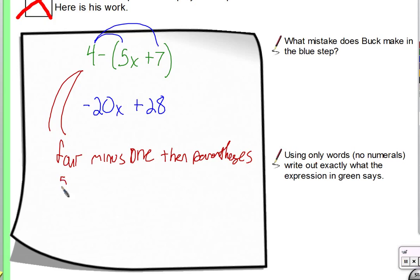4 minus 1, sorry, 1, then parentheses. And what? 5x. 5, oh, I'm doing the same thing I said now, 3. 5x plus 7 parentheses. 5, oh, here's something that's confusing for me. 4 minus 1, then. What does then? I don't know.